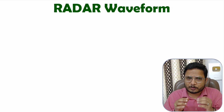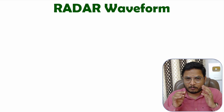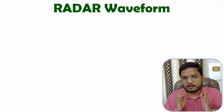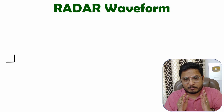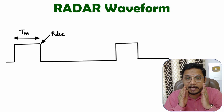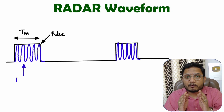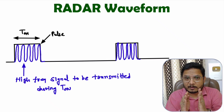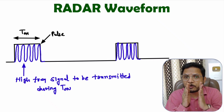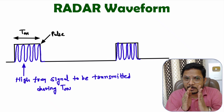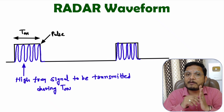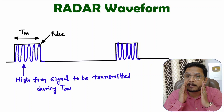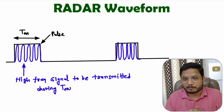First of all, one should know what a pulsed radar system is. A pulsed radar system transmits an EM wave for a short duration of a pulse — for a short duration of time, a high power, high frequency signal is transmitted by the pulsed radar system.